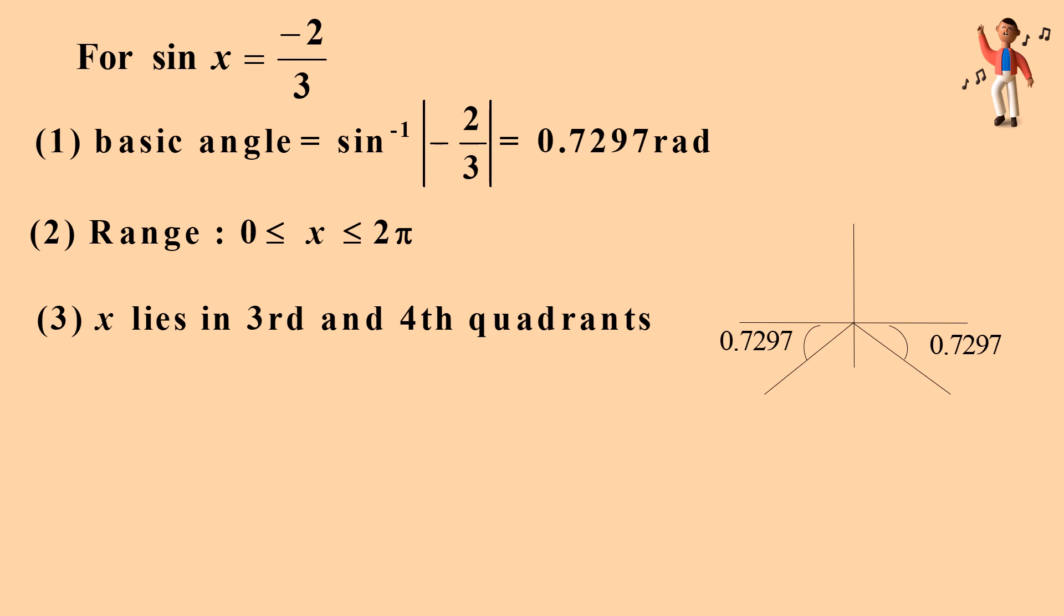From the diagram, we can know that the angle is at the third and fourth quadrants. So, we get x = 3.8713 radian and 5.5535 radian.